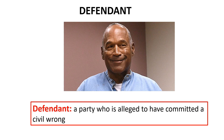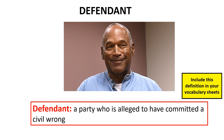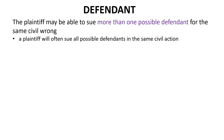The second key concept is the concept of a defendant. A defendant is a party who is alleged to have committed a civil wrong. Find the term 'defendant' in your vocabulary sheets and write this definition in there. It may be that there is more than one defendant who the plaintiff could sue for the same civil wrong. In such a case, the plaintiff will often sue all possible defendants in the same civil action so as to maximize the likelihood that the plaintiff will be fully compensated.